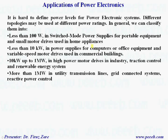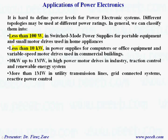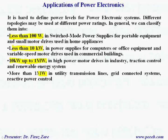It's hard to define power levels for power electronic systems as different topologies may be used at different power ratings. In general, we can classify them into: less than 100 watts — switch mode power supplies for portable equipment and small motor drives for home appliances; less than 10 kilowatts — power supplies for computers or office equipment and variable speed motor drives in commercial buildings such as air conditioning; 10 kilowatts to 1 megawatt — high-power motor drives in industry, traction control, and renewable energy; and more than 1 megawatt — utility transmission lines, grid-connected systems, and reactive power control.